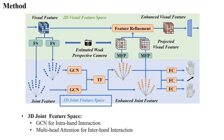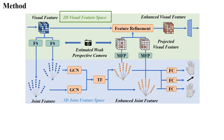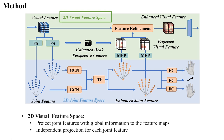Then we use multi-head attention modules to model the spatial relationships between two hands, capturing long-range dependencies between joints. Finally, we use the enhanced joint features to predict the model parameters of two hands and the spatial relationship between them. We then project the 3D joint features into a 2D visual feature map through coordinate interpolation.